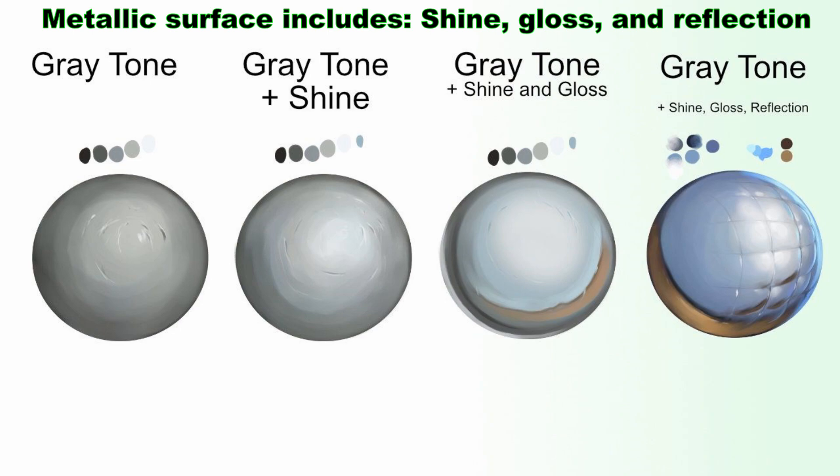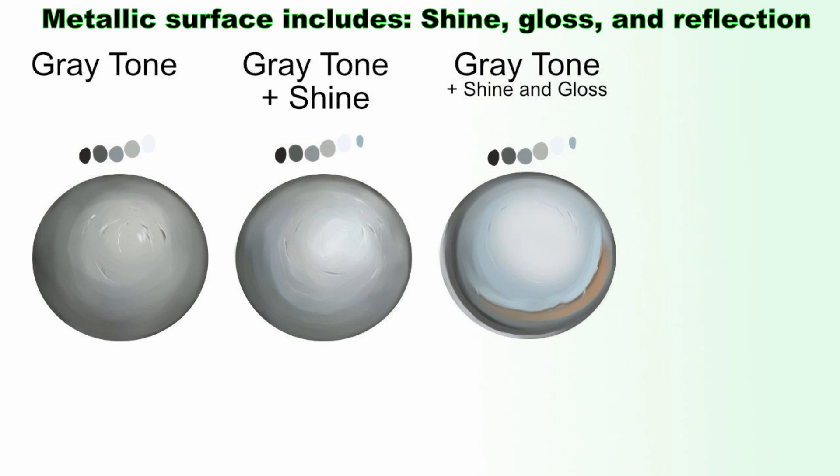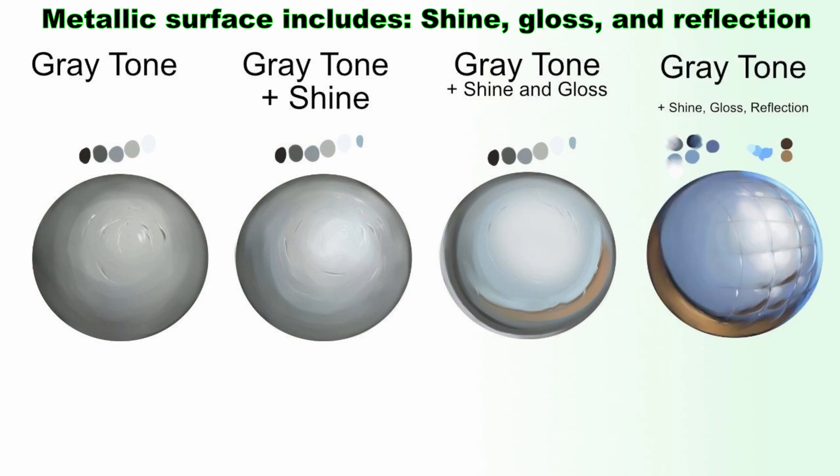Shine is the amount of brightness on a surface. Gloss is a superficial luster or shine, like a glaze. Reflection is something that reflects on the surface of a metallic object.